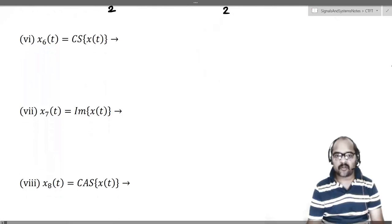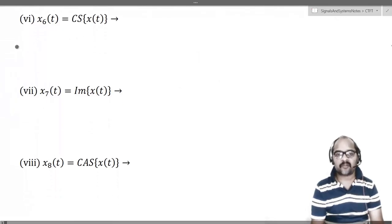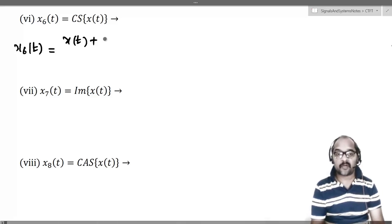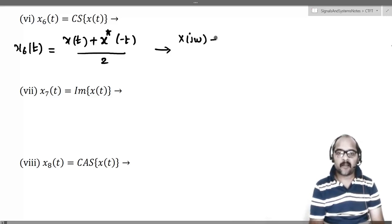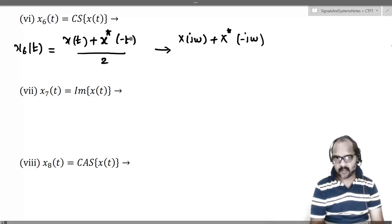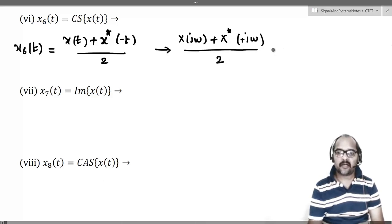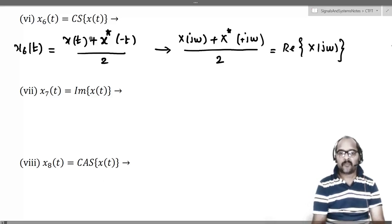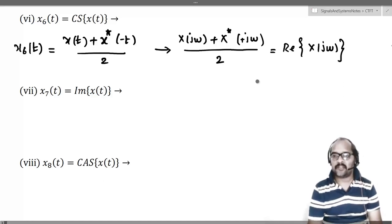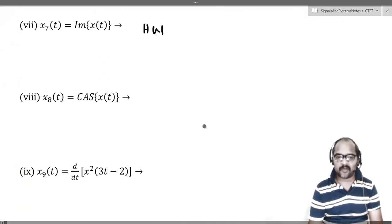The sixth question asks for the Fourier transform of the conjugate symmetric part of x(t). x6(t) = [x(t) + x*(−t)] / 2. x(t) has X(jω); x*(t) has X*(−jω), so x*(−t) has X*(+jω). Thus the Fourier transform is [X(jω) + X*(jω)] / 2, which is the real part of X(jω). Conjugate symmetric part of x(t) will have the real part of X(jω) as the Fourier transform. The seventh and eighth questions are left as homework, as we have already seen conjugate symmetric and conjugate anti-symmetric parts.